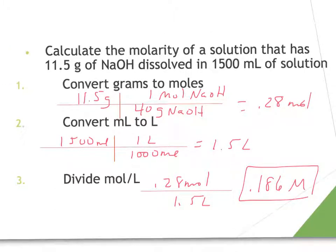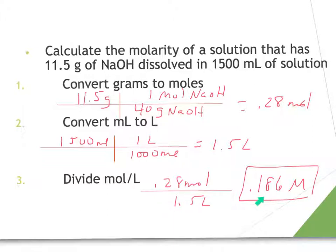In this example, we are asked to calculate the molarity of a solution that has 11.5 grams of sodium hydroxide dissolved in 1,500 milliliters of solution. We must first convert 11.5 grams of sodium hydroxide to moles using 1 mole over the weight of sodium hydroxide from the periodic table, giving us 0.28 moles. We take our 1,500 milliliters — 1 liter equals 1,000 milliliters — and convert to liters. Dividing moles by liters, we get an answer of 0.186 molarity.